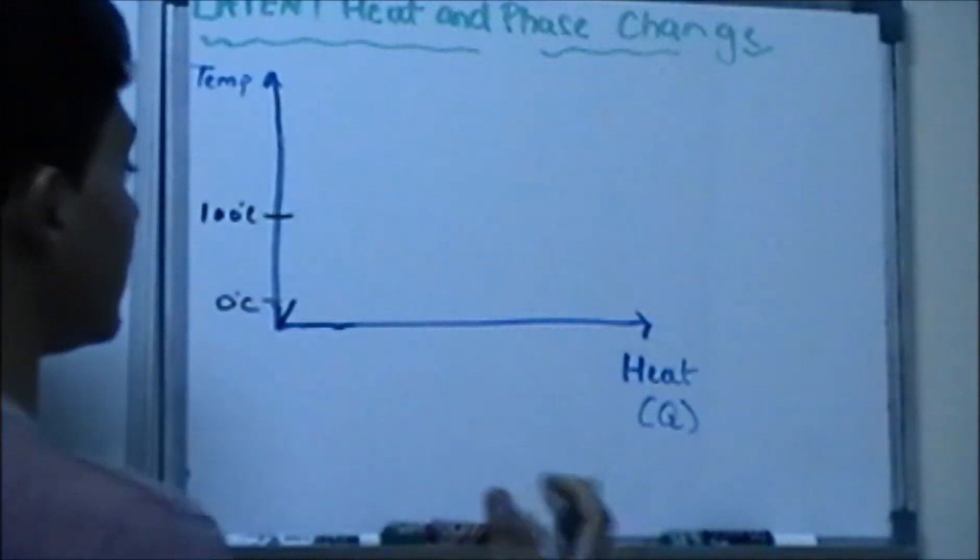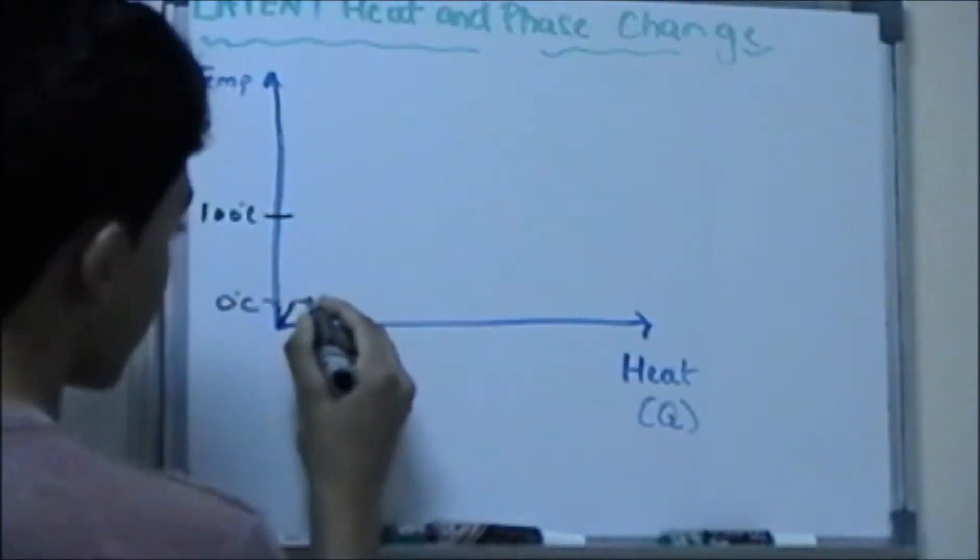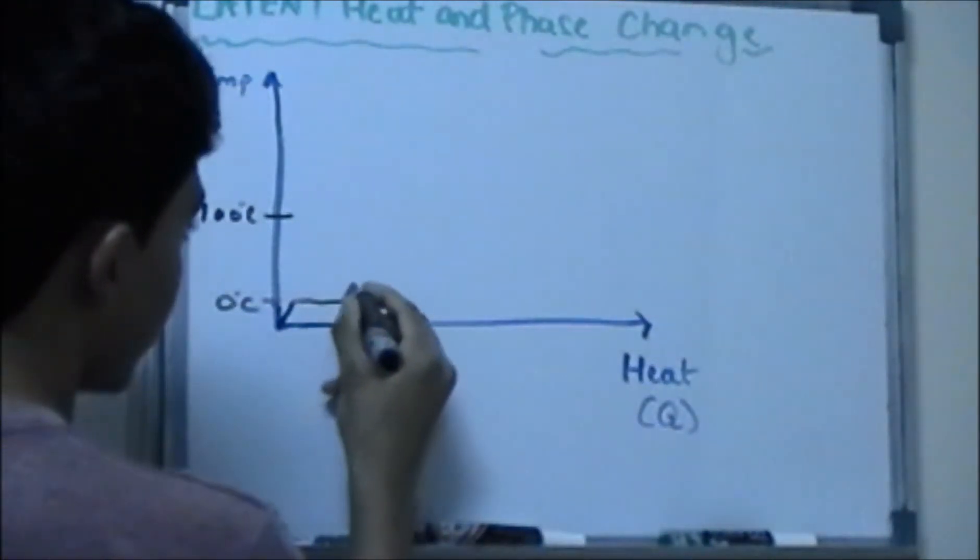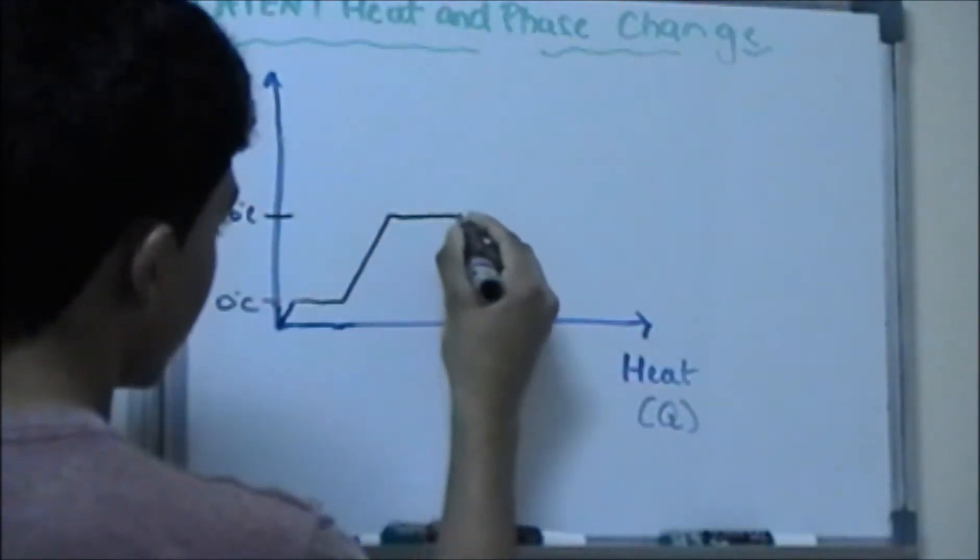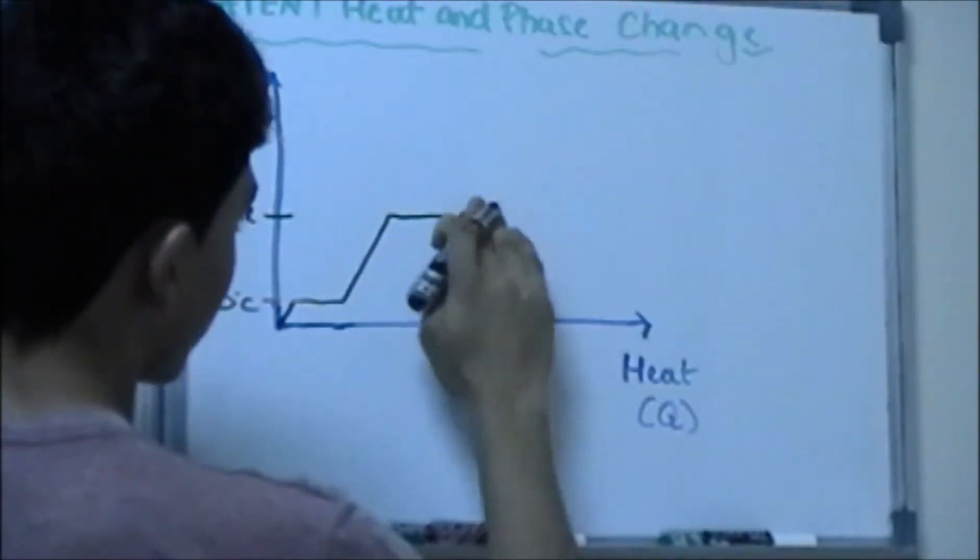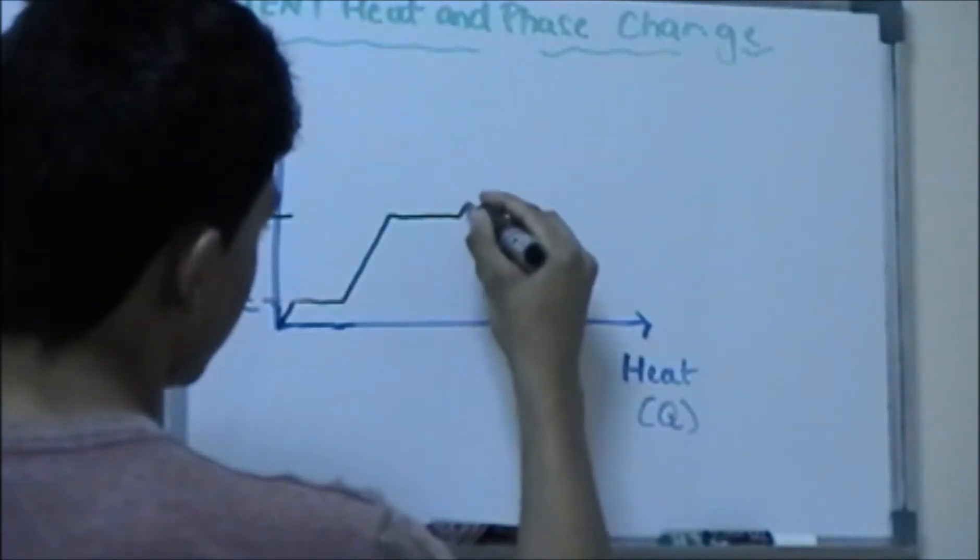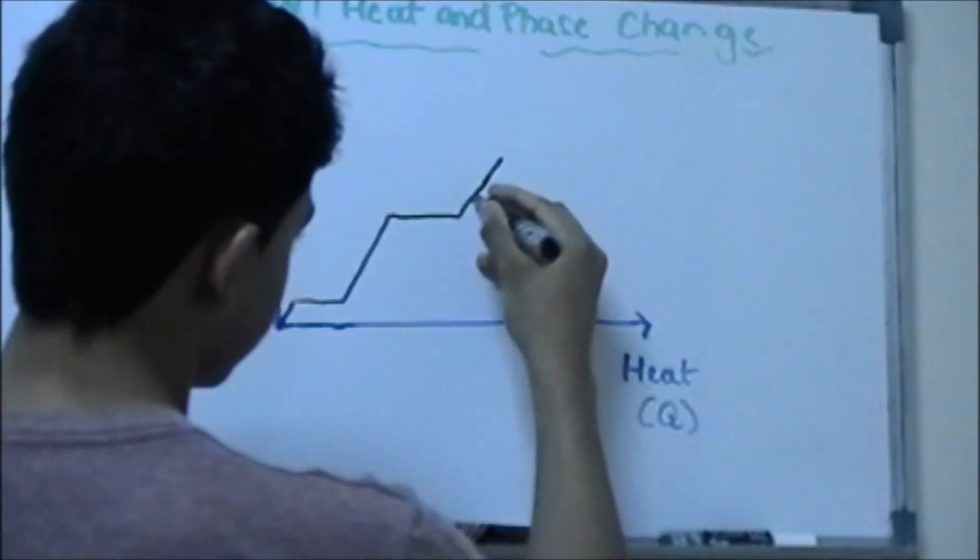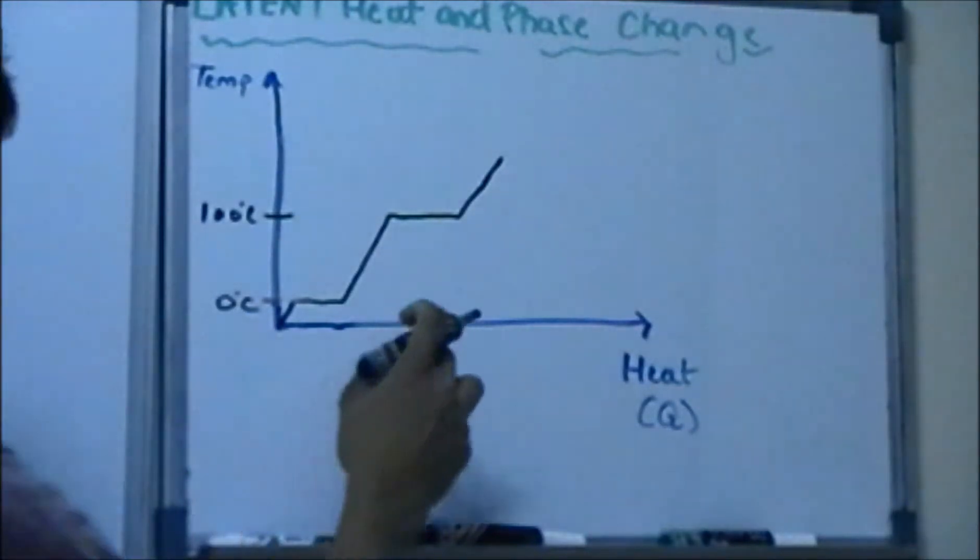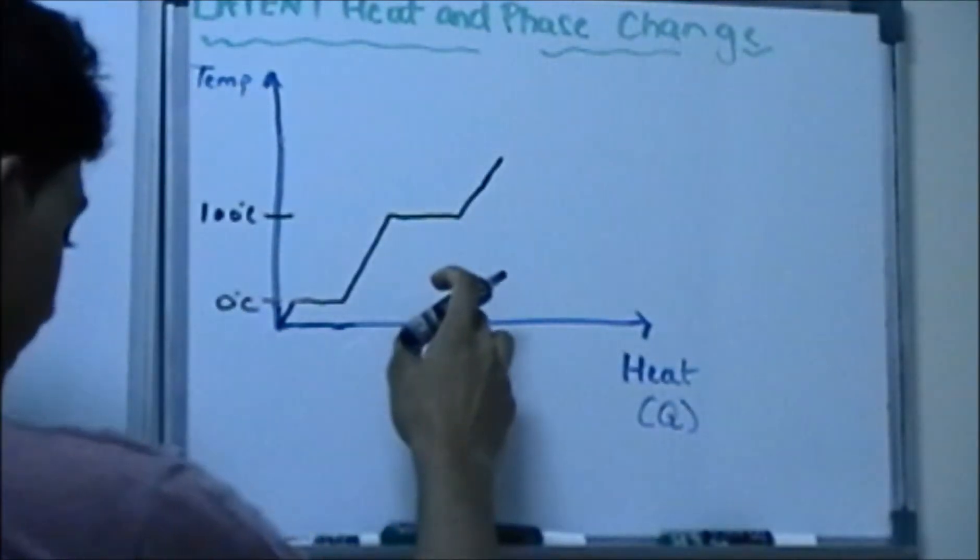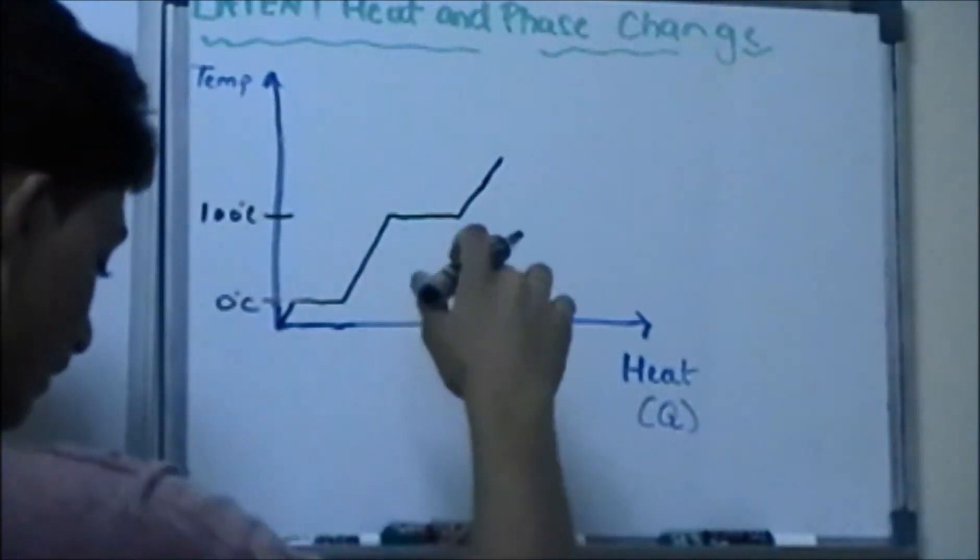So the ice is here and it goes to 0 degrees Celsius. Remember you are always adding heat to it. So after some time it goes over here and goes up to 100 degrees Celsius, goes over here straight and up. Let me just tell you why it doesn't do that.